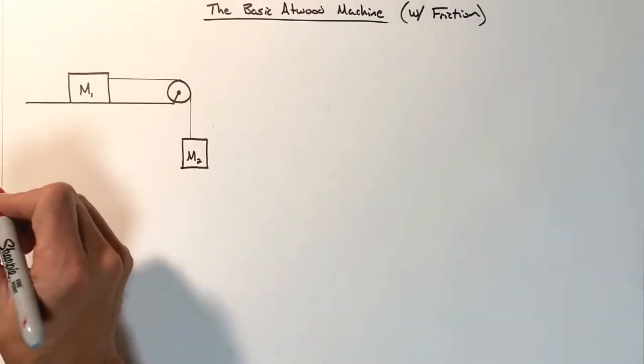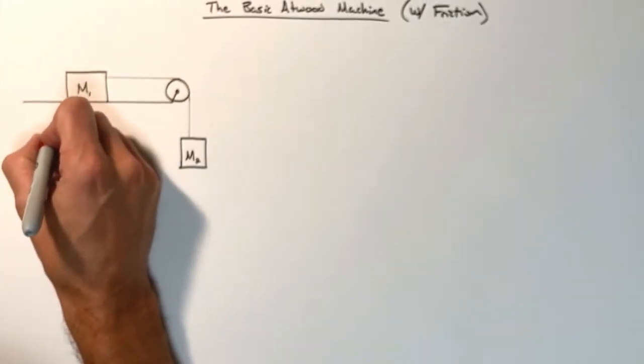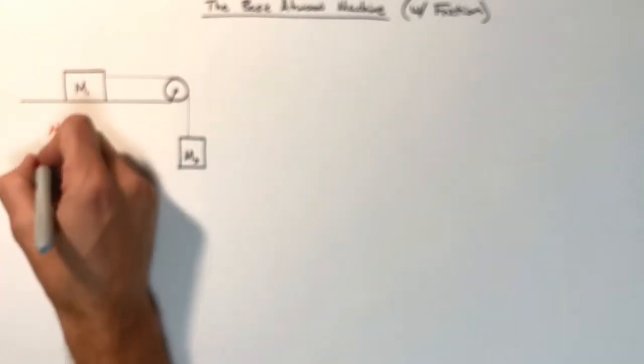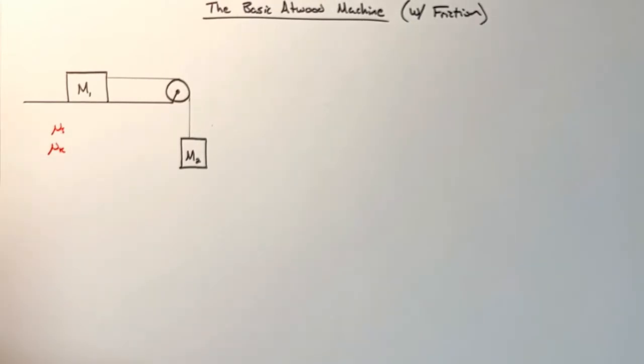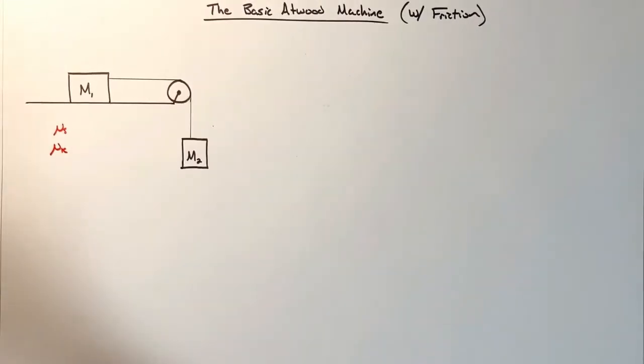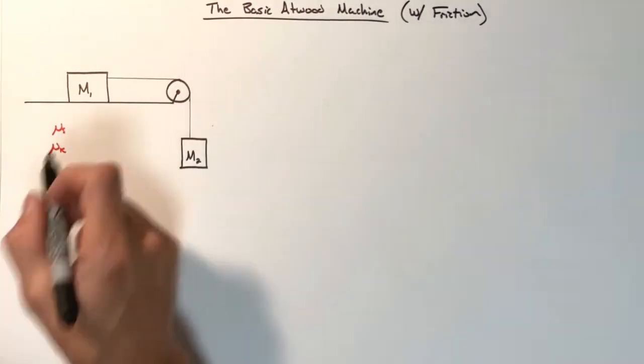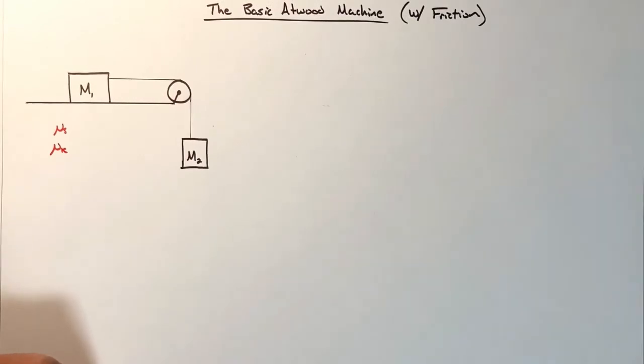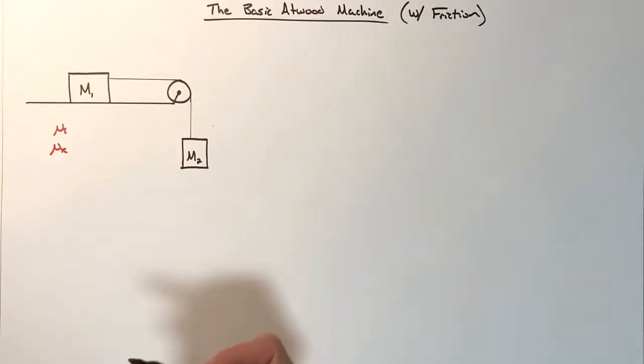So we're going to say there's some coefficient of friction between the block and the surface, that is mu s for static and mu k for kinetic friction. These are two different values. What we're going to do is derive an equation to see whether or not this system is going to move, and then if it does meet the conditions to move, we're going to find the acceleration of the system as it moves forward.